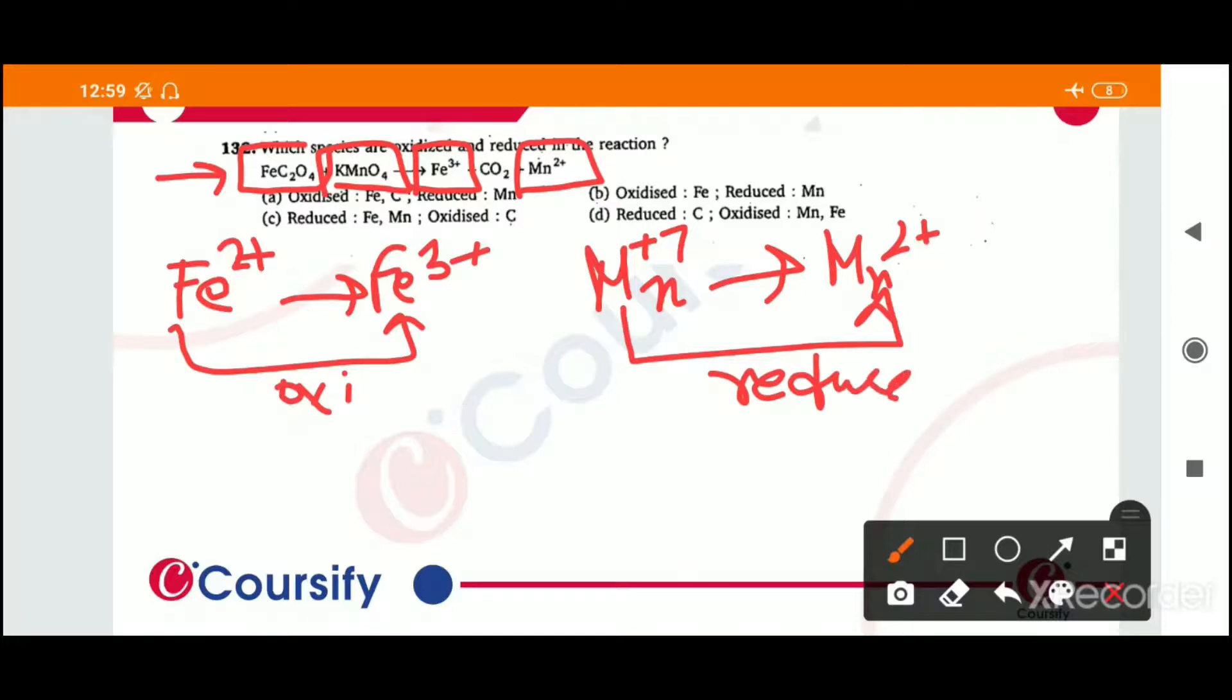Let's look at the carbon. In this compound, carbon oxidation number is plus 3. And on the right side, the oxidation number is plus 4. So what is carbon also? Oxidized.